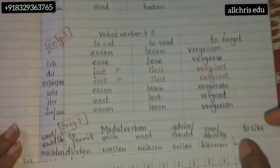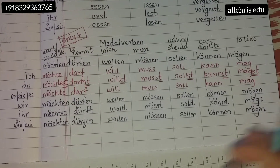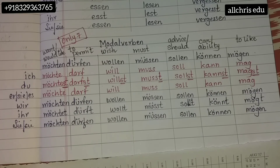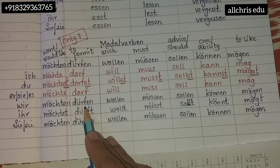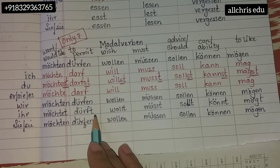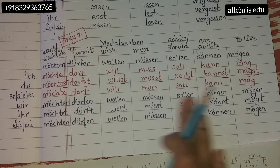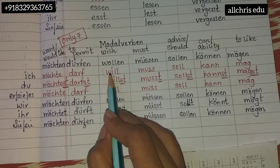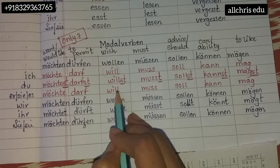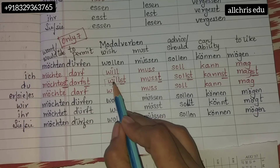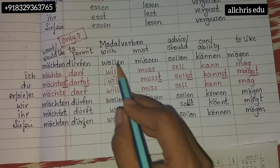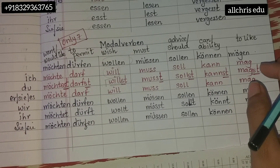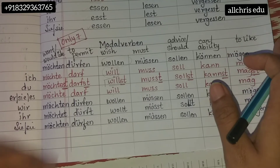Now come the Modalverben — there are seven modal verbs. The meanings are written in black. The last three conjugations follow the normal rule — take the root word and add en. For the top three conjugations, learn the ich form; it is similar to the er/sie/es form. Write the du form by adding 'st' to the ich form. Write all seven modal verbs with their meanings.